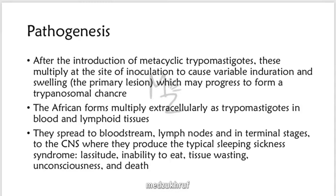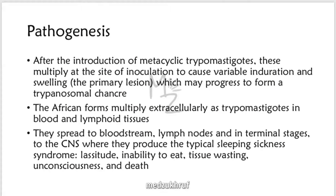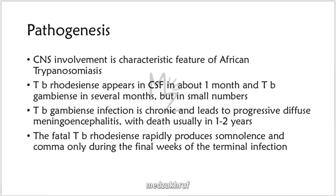Pathogenesis. After the introduction of metacyclic trypomastigotes, they multiply at the site of inoculation to cause induration — localized hardening and swelling — the primary lesion, which may progress to form a trypanosomal chancre, a painless ulcer. The African forms multiply extracellularly as trypomastigotes in blood and lymphoid tissues. They spread to the bloodstream, lymph nodes, and in terminal stages through the central nervous system, producing the typical sleeping sickness syndrome: lassitude, inability to eat, tissue wasting, unconsciousness, and death.